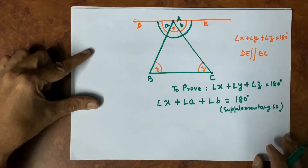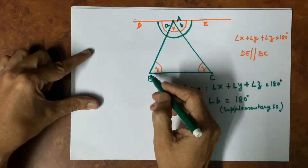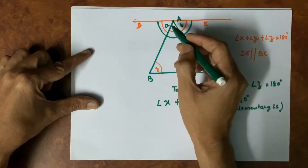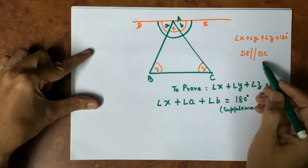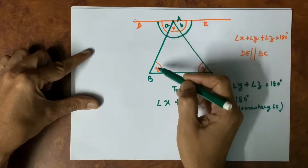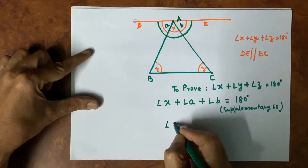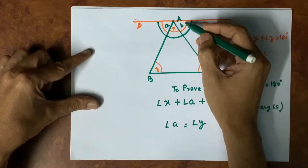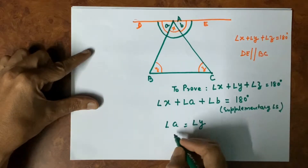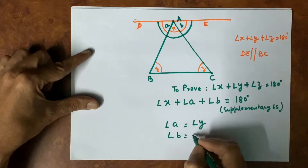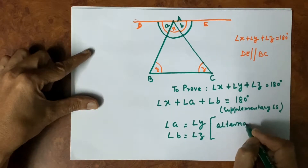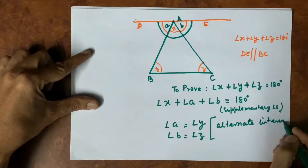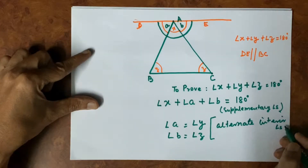Now, we have studied that a transversal joining two parallel lines makes alternate interior angles equal. So, when DE is parallel to BC, the alternate interior angles: angle A is equal to angle Y, and angle B is equal to angle Z. These are alternate interior angles made by the transversal joining two parallel lines.